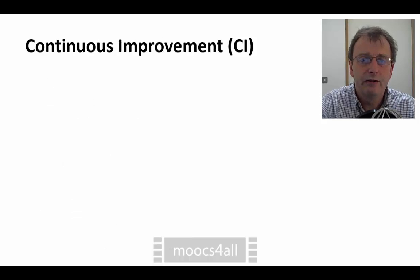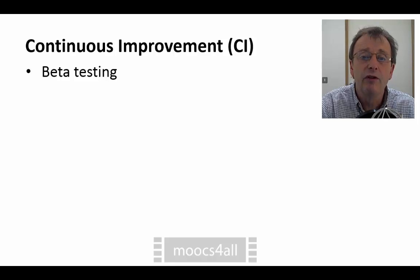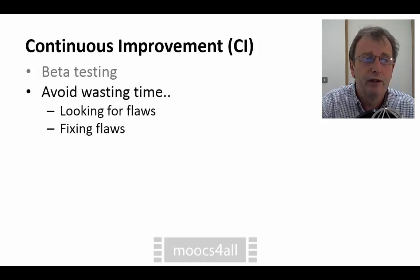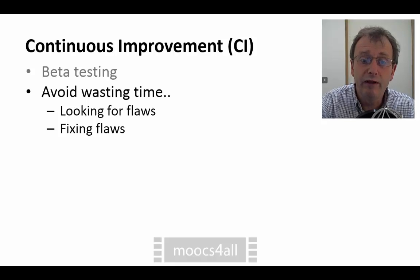Let's talk about the concept of continuous improvement. This may often be called beta testing — rather than trying to produce a perfect product at the start, we issue it in less than perfect form to the public, maybe a limited number, and get them to identify the problems. This allows us to avoid wasting time looking for flaws that may not be there, or fixing flaws that users may not consider flaws at all.